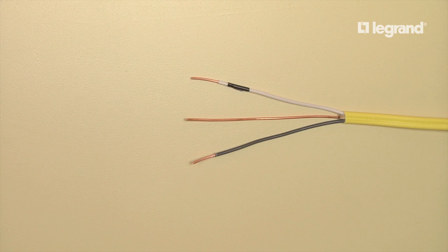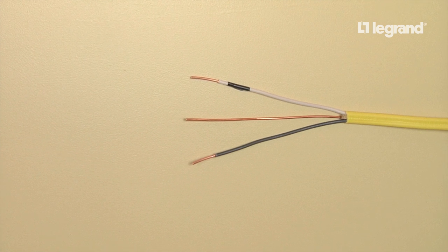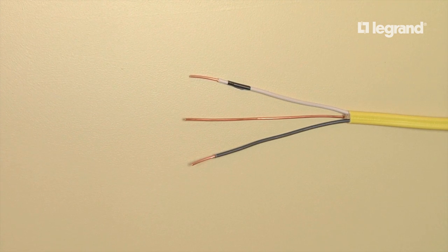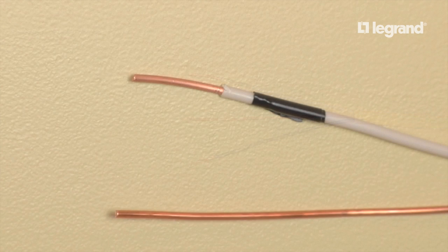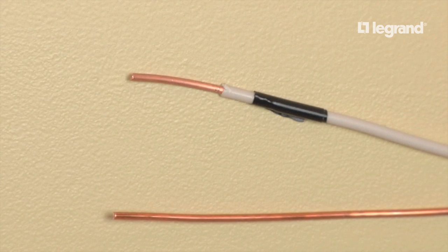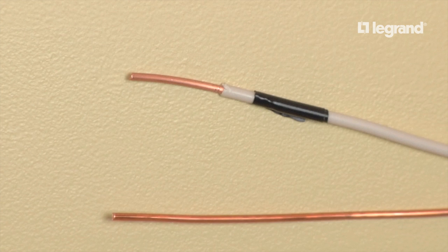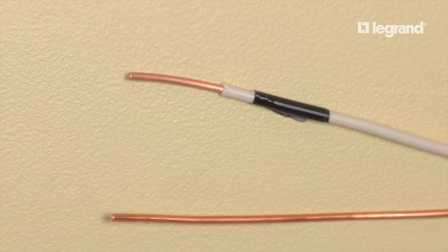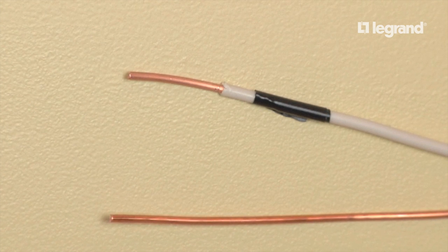It is also important to note that the white wire is sometimes used as a hot wire in some wiring installations. If this is the case, the white wire should be marked with black electrical tape or black paint. However, the person that installed the wire may not have marked it, so never assume that it is not hot if you are not certain.